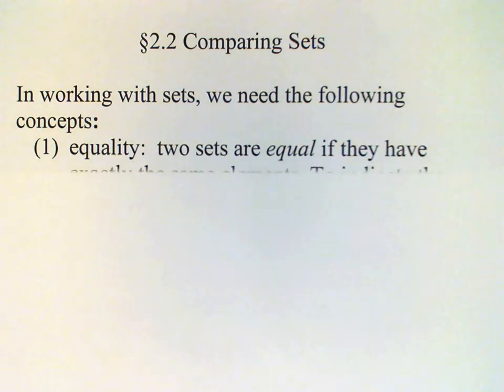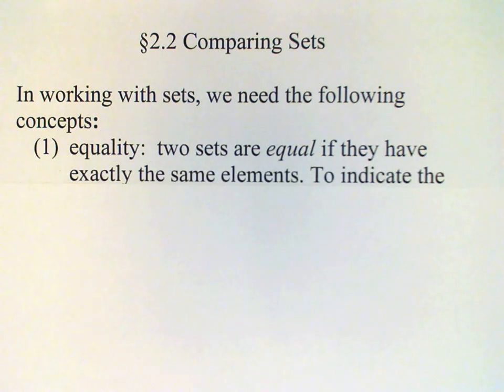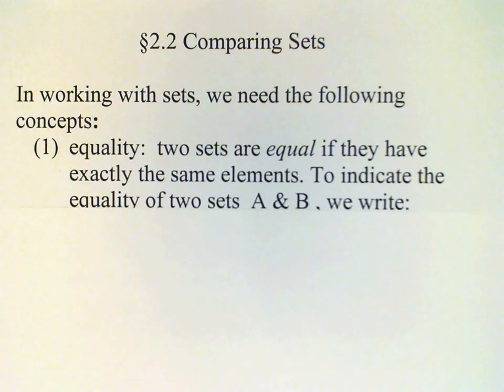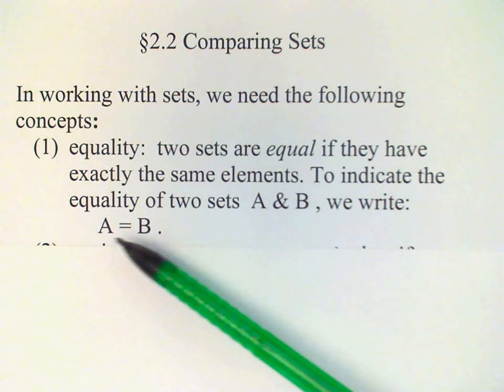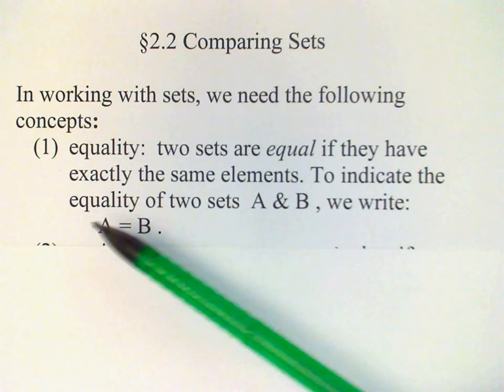we will say that two sets are equal if they have exactly the same elements. To indicate that two sets, let's say A and B, are equal, we'll use the usual equal sign and we'll read this as A equals B.